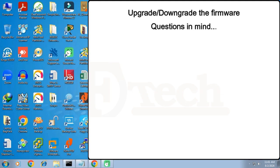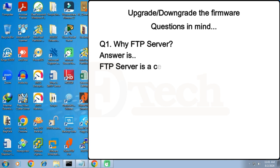There are two questions which may arise in our mind. The first question is: why do we use an FTP server while upgrading or downgrading the firmware of an access point? The answer is that an FTP server is a central location where we can save all the firmware files, and then from any PC on our network we can access these firmware files. If you have no idea what an FTP server is and how to configure it, please watch my previous two videos — I will give the links in the description of this video.